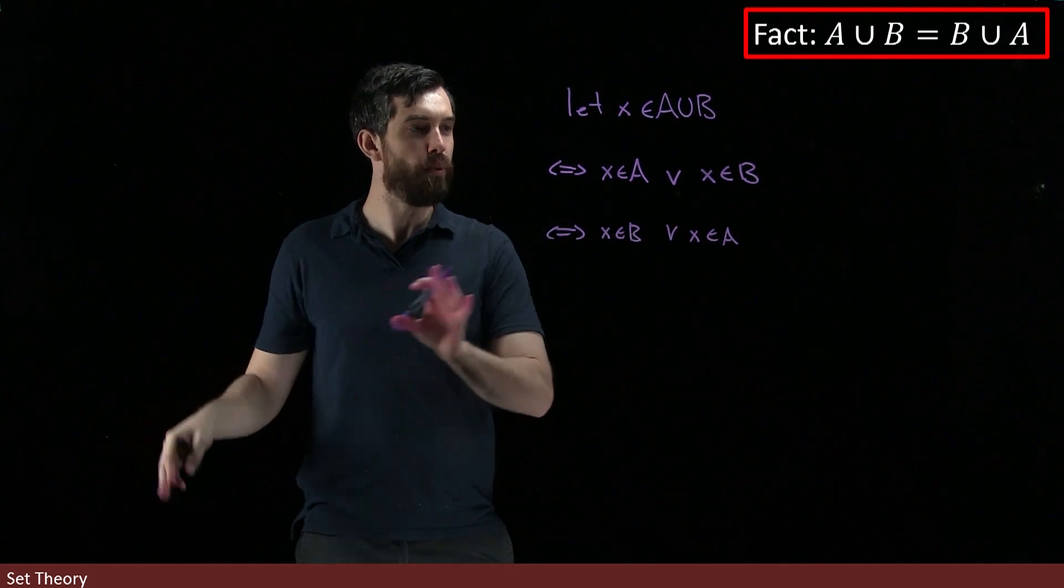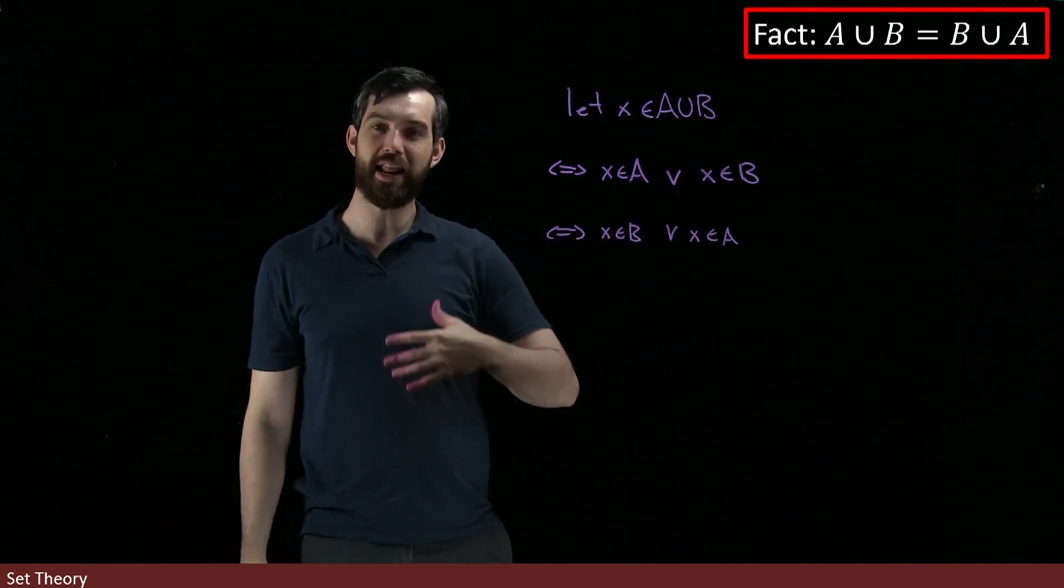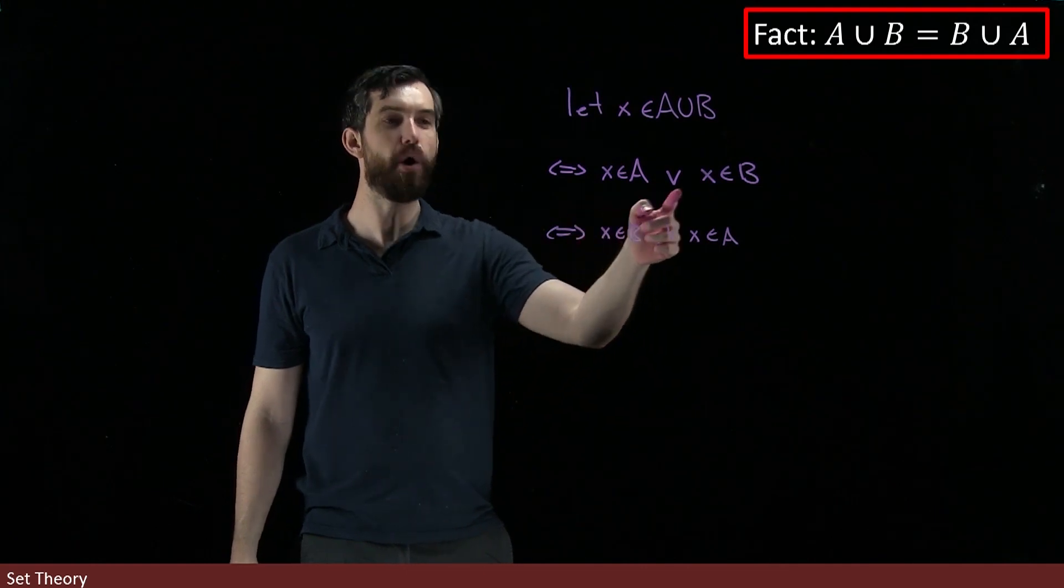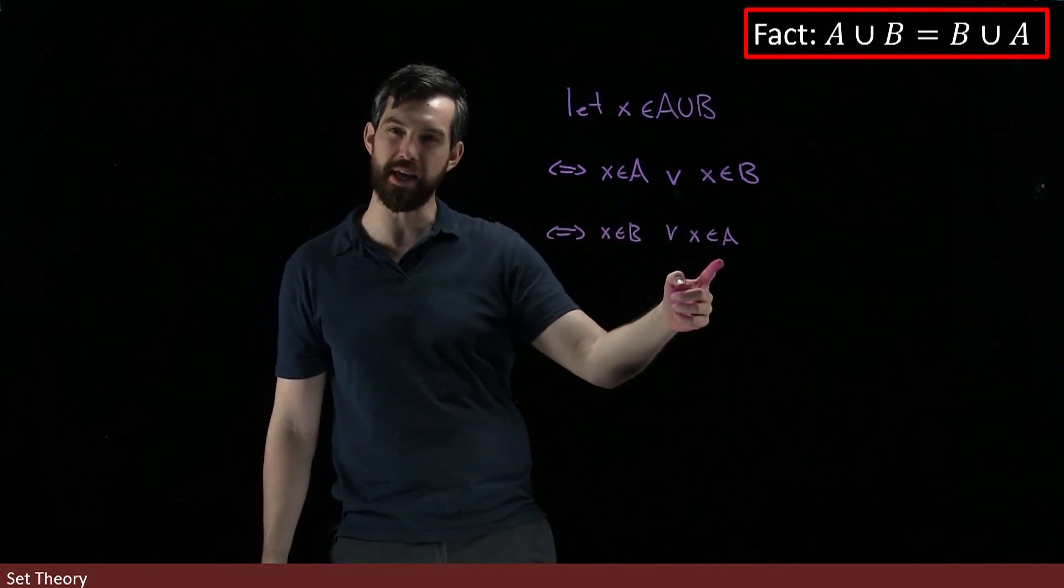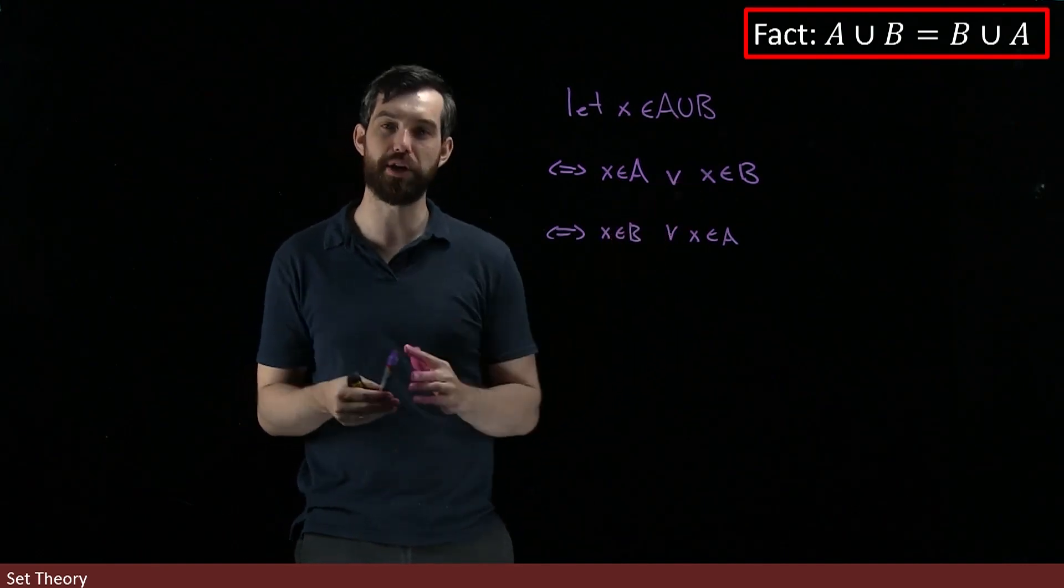Indeed, back in the day we would have verified this logical property by looking at it at a level of truth tables. This is P or Q, and this is Q or P, and you can verify that they have the same truth table. So this is a logical equivalence.